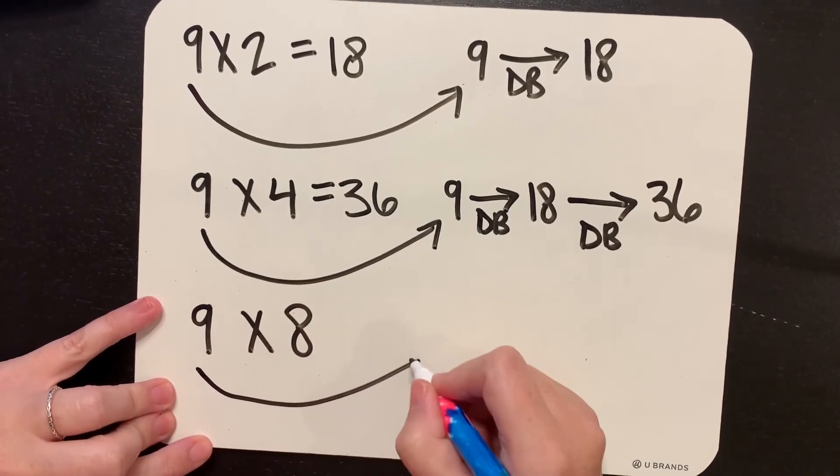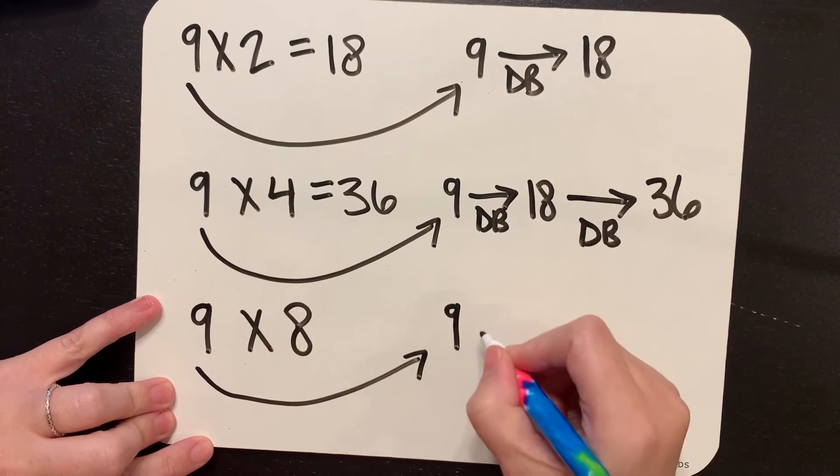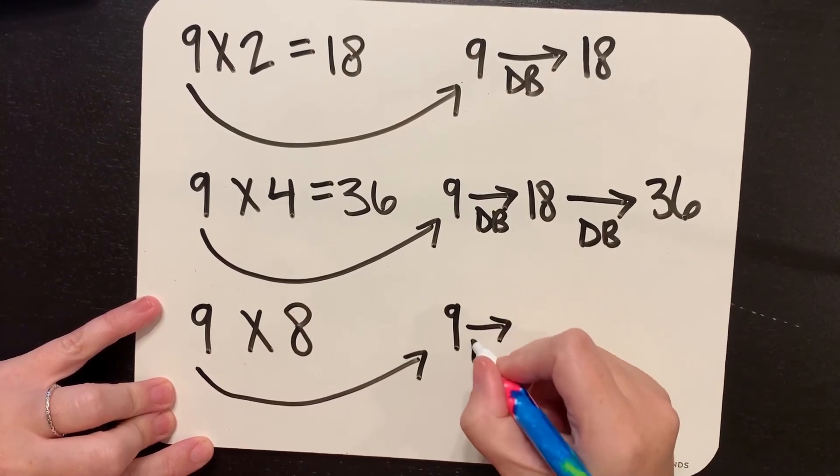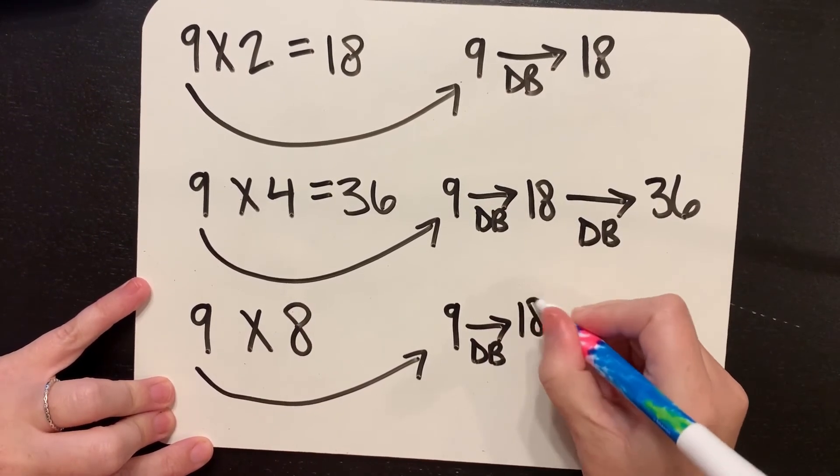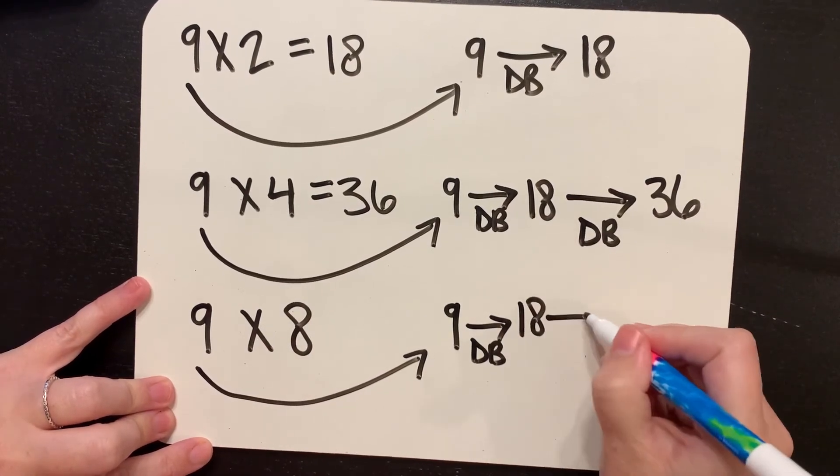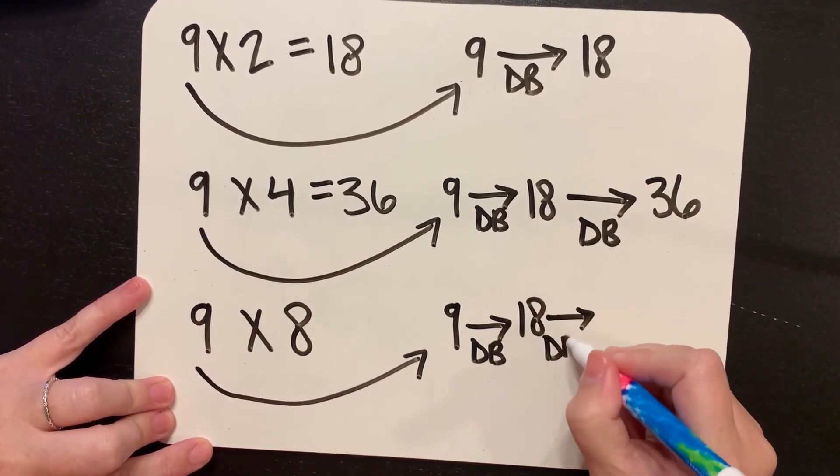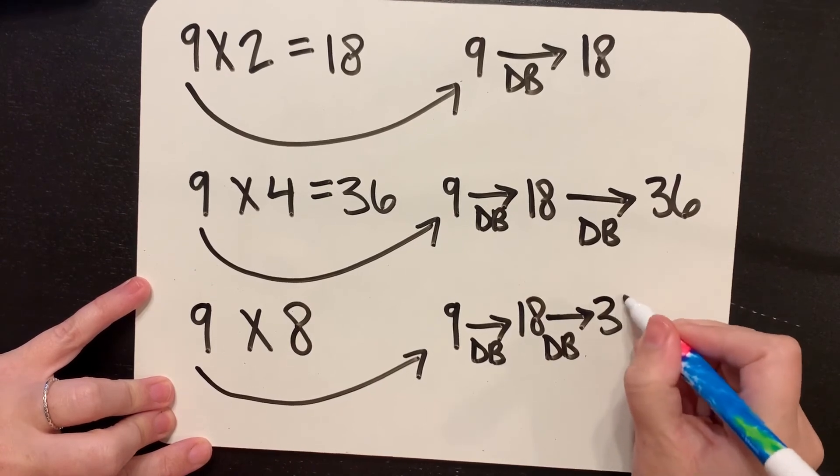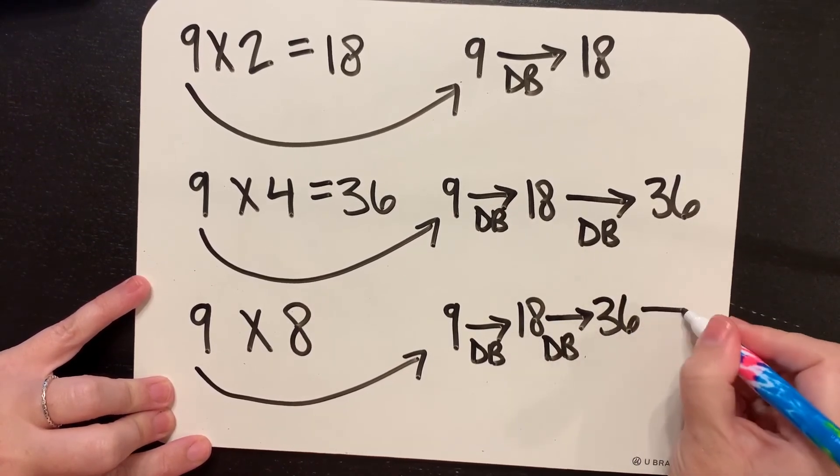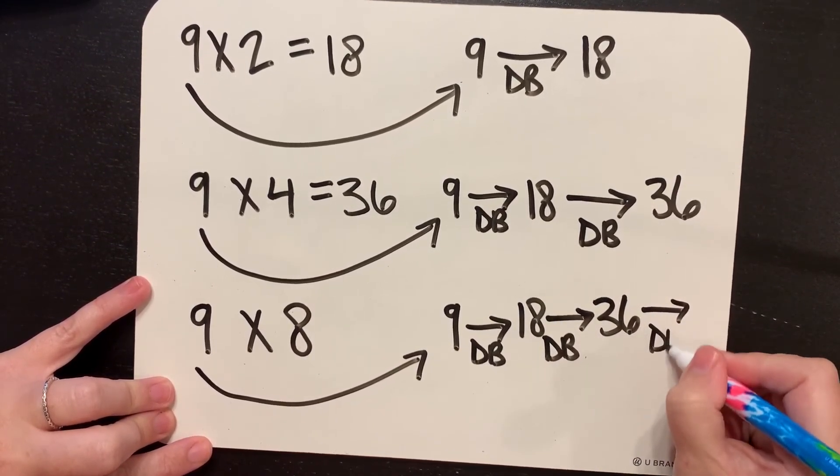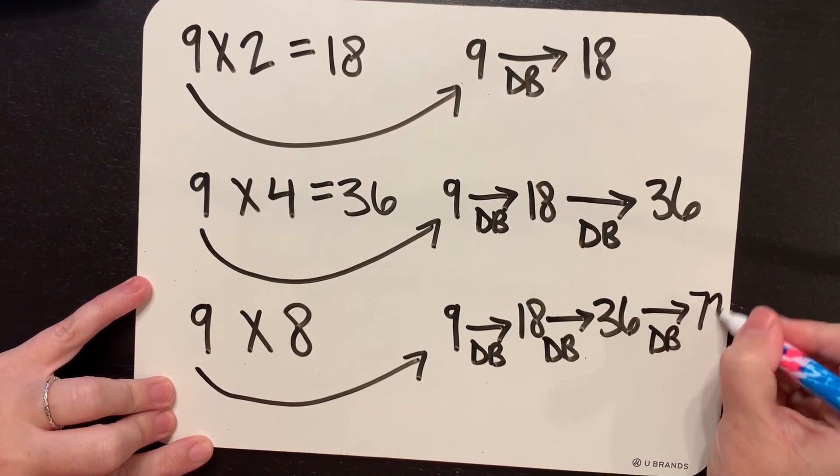Let's take our 9. We're going to double it once to get 18, we're going to double it twice to get 36, and then we're going to double it a third time to get 72.